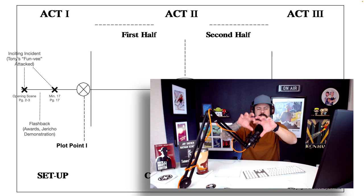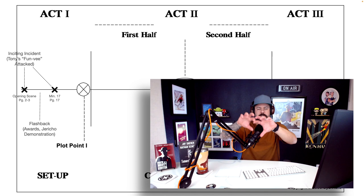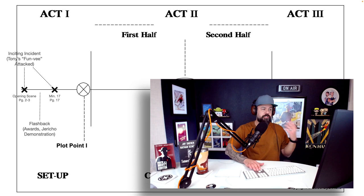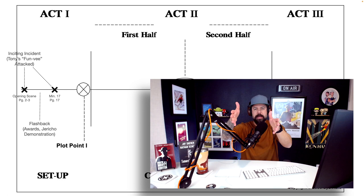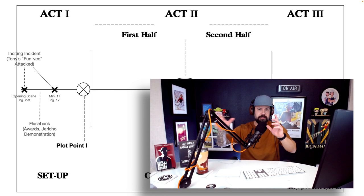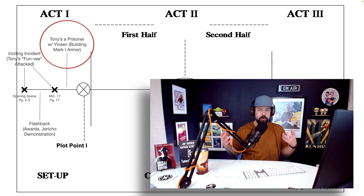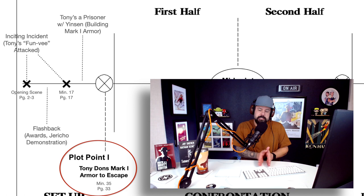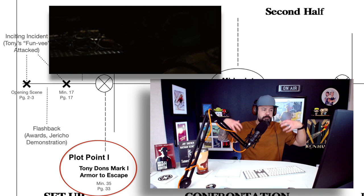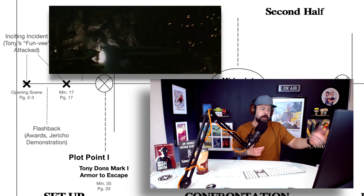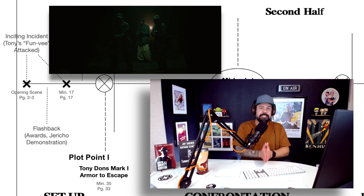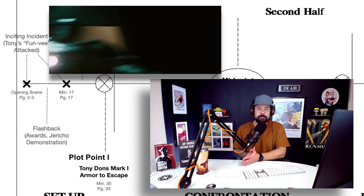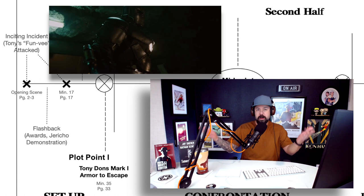After the inciting incident and flashback sequence, the inciting incident actually lands at about minute 17 or page 17 in the script. Then we see Tony as a prisoner with Jensen and they're building the Mark 1 armor together. Plot point one — a big deal because it takes the script in another direction — is when Tony actually puts on the Mark 1 armor in order to escape. That happens at about minute 35 or page 33 in the script. When Tony puts on that armor, that's the impetus for us to get really excited about what comes next and pushes the story in a new direction.